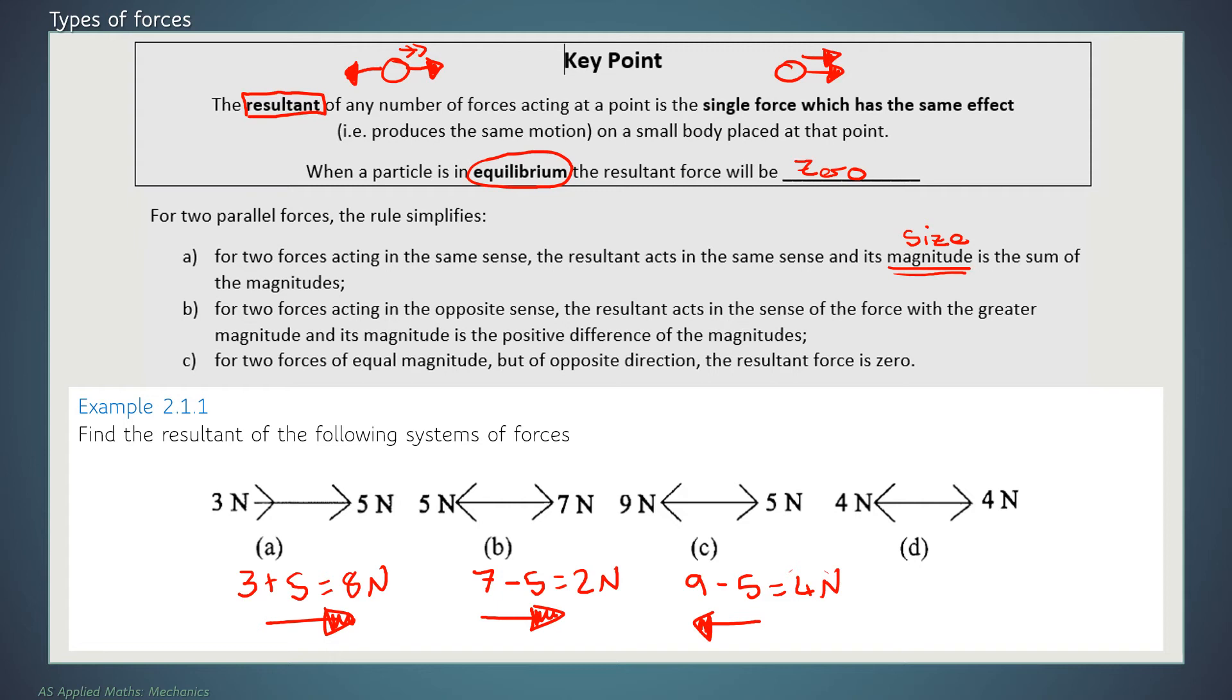Part D, for two forces of equal magnitude, but of opposite direction, the resultant force is zero. That is because if you do four take away four, you get zero. And that means that we are in equilibrium. Two forces in the same direction, they're going to help each other. If one is going in the opposite direction, it's going to slow it down. The reason why you need the diagrams is because it is important that you can work out which direction your particle is moving in.